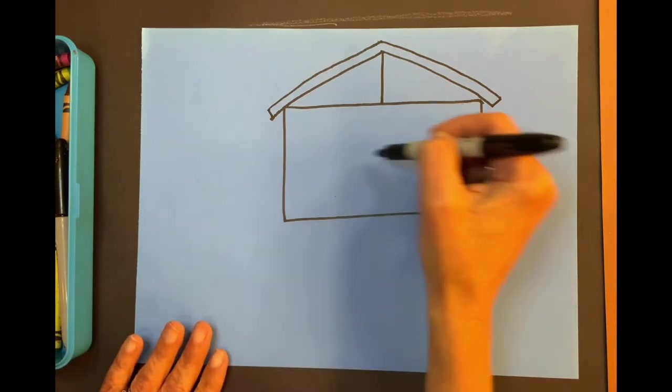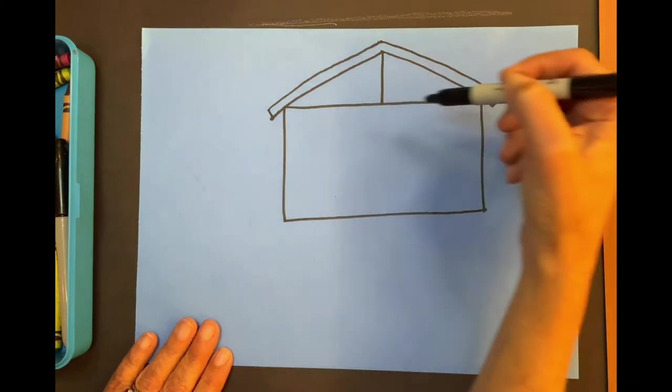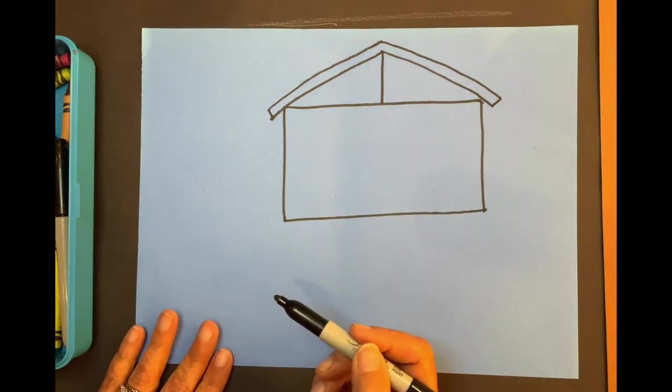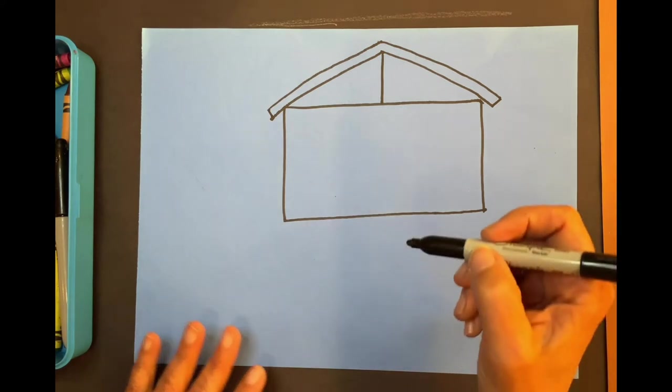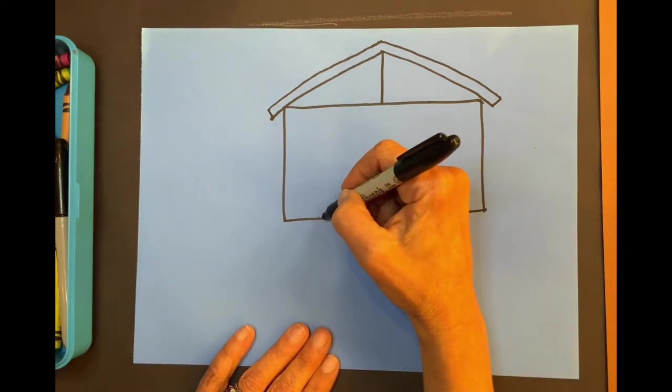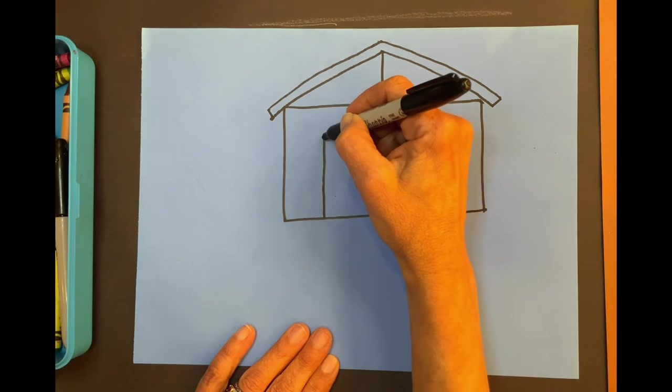Good. Now we're ready to put the door. We're going to put the door kind of somewhere in the middle, maybe a little bit to the left, maybe a little bit to the right. You have your choice. Watch me make the door first. Mine's going to go about right here. Now we're not short people. We're kind of tall. So we're going to go up,